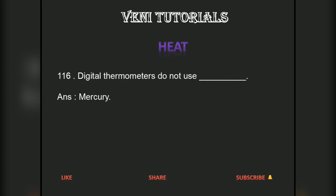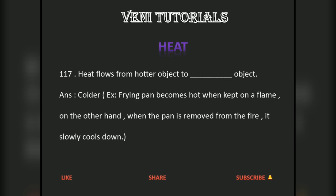Digital thermometers do not use mercury. Heat flows from a hotter object to a colder object. For example, a frying pan becomes hot when kept on a flame; on the other hand, when the pan is removed from the fire, it slowly cools down.